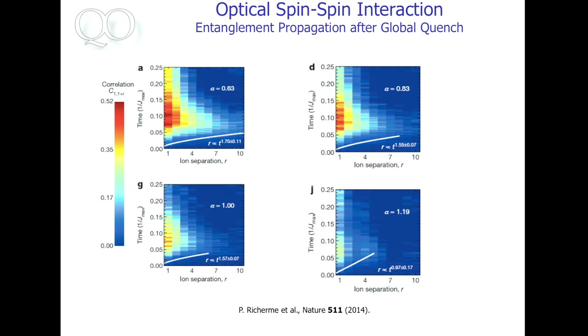So this is another example. A very nice experiment from the group of Chris Monroe in Maryland, where they used trapped ions to observe the propagation of entanglement along a chain of ions. So you have a chain of ions, a spin chain, and then you do something to one ion and then the entanglement propagates between those.